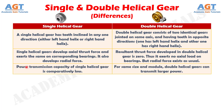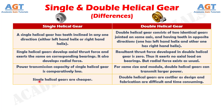Number 3: power transmission capacity of single helical gear is comparatively low, whereas for the same size and module, double helical gears can transmit larger power. Number 4: single helical gears are cheaper, whereas double helical gears are costlier as design and fabrication are difficult and time consuming.